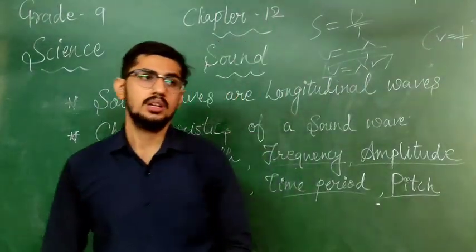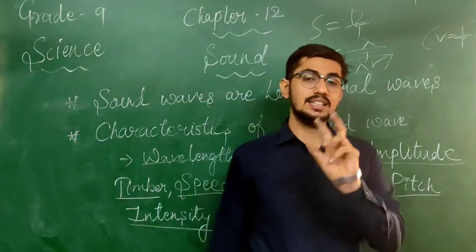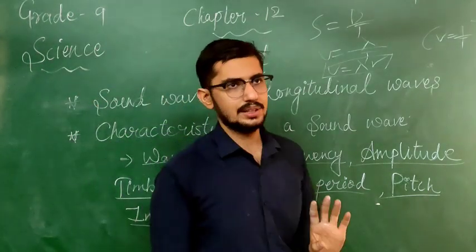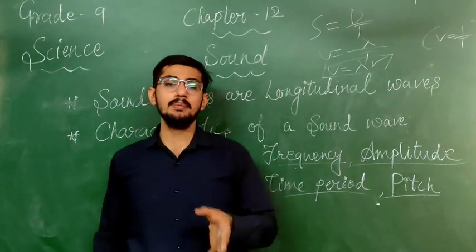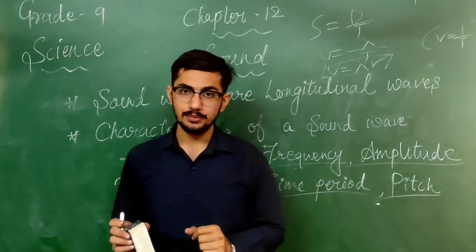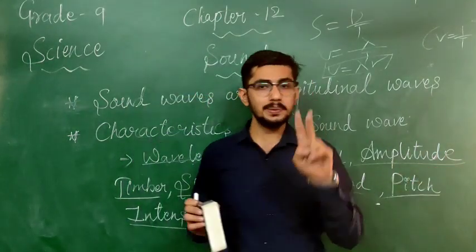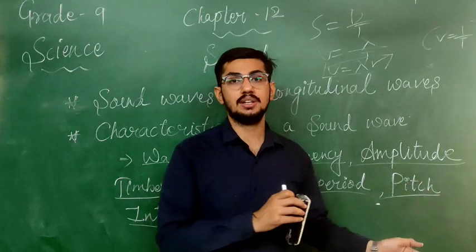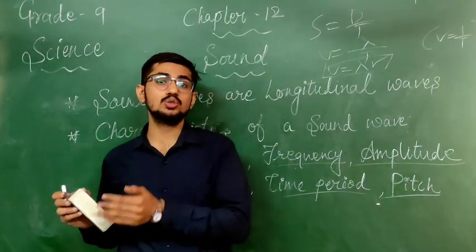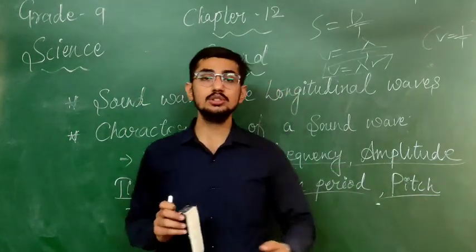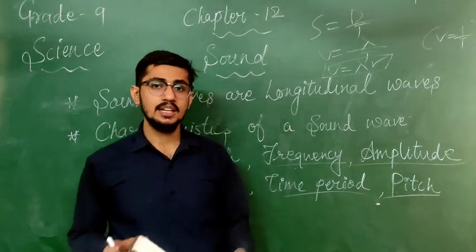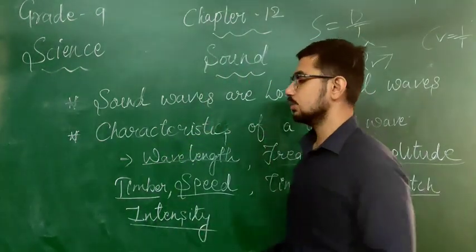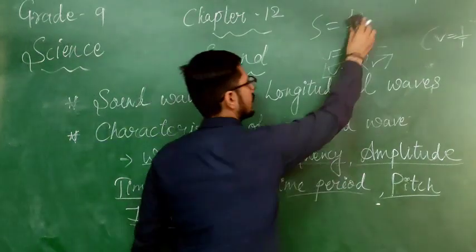The last characteristic is intensity. Sometimes intensity and loudness are used interchangeably, but generally they are different properties. For example, if one speaker is playing music at volume 80 and two speakers together are each playing at volume 40, the two speakers together produce more overall sound. That total amount of sound energy reaching you is the intensity — the amount of sound, which is intensity.